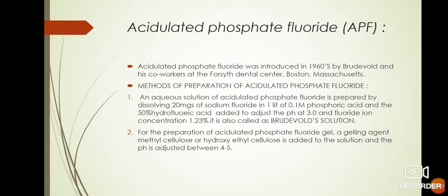For the preparation of acidulated phosphate fluoride gel, a gelling agent, methylcellulose or hydroxyethylcellulose, is added to the solution and the pH is adjusted between 4 to 5.